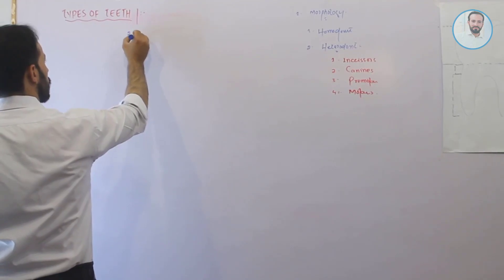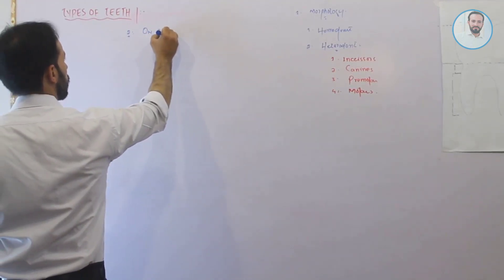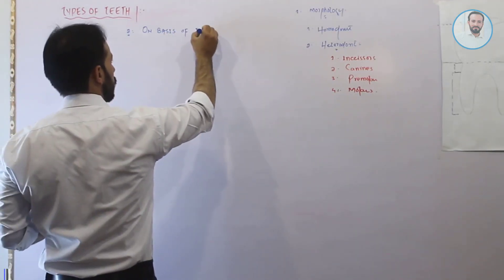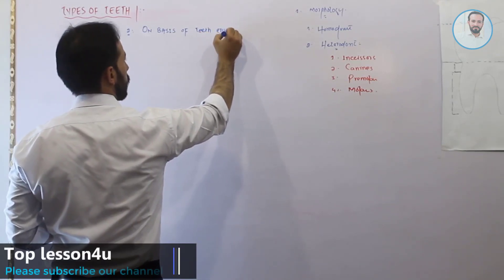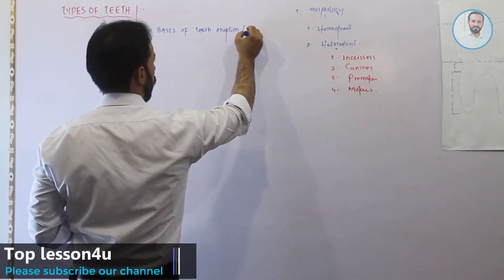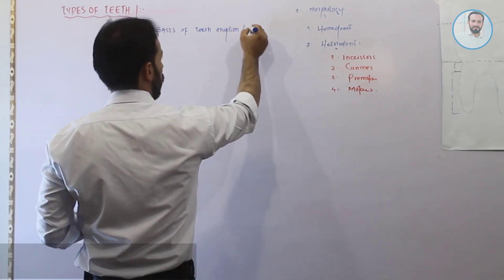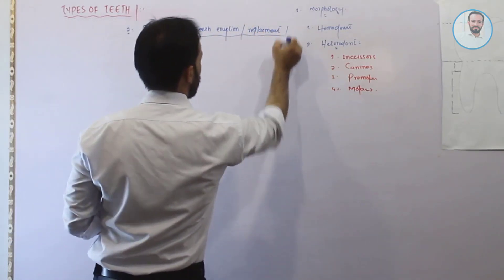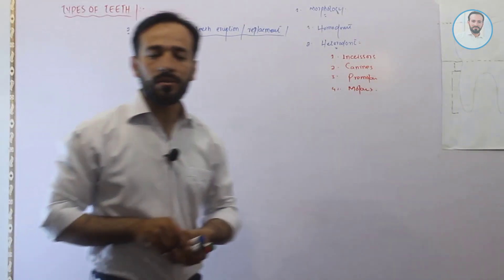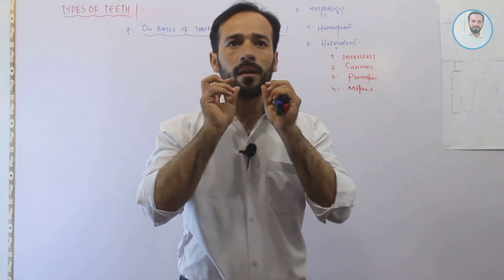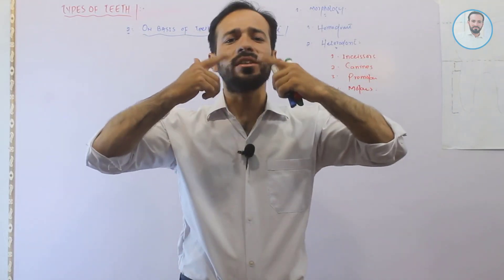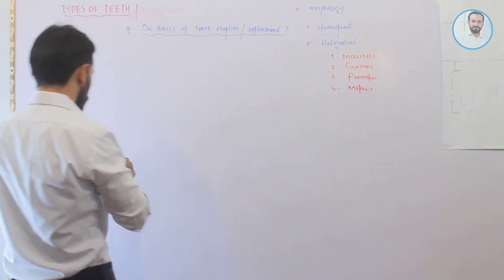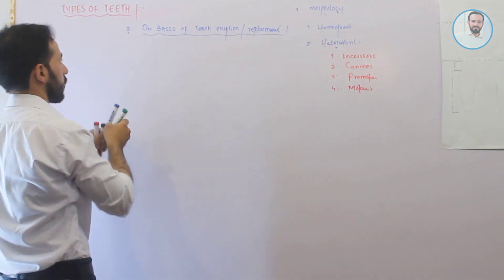In this video we are classifying teeth in another way. The second classification is on the basis of teeth eruption or on the basis of teeth replacement — that is, the basis on which teeth arise and form from the gums or from the jaws.